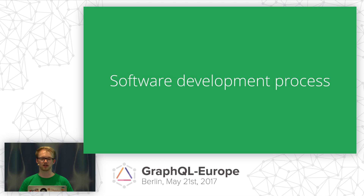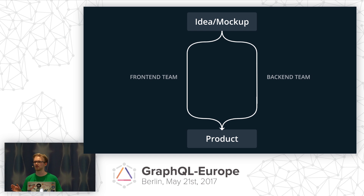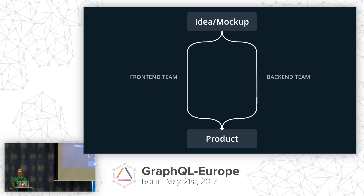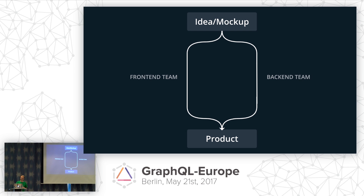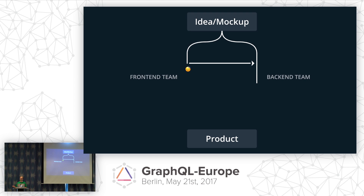Let's take a look at how software products are usually being developed. In the best-case scenario, the front-end team and the back-end team are exactly on the same page and can build a perfect product based on just an idea or a mock-up without any further communication. But usually that's not how it works. In reality, things are not communicated clearly enough, requirements change, and one team has to wait for another until new changes have been implemented. This really slows down development and can be quite frustrating.